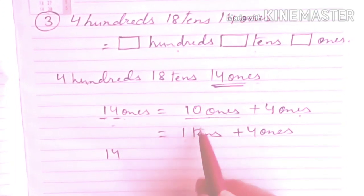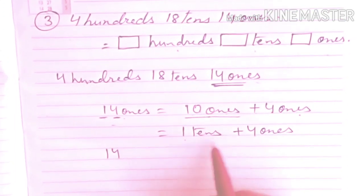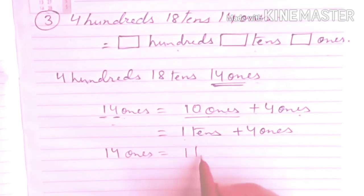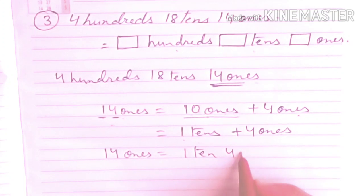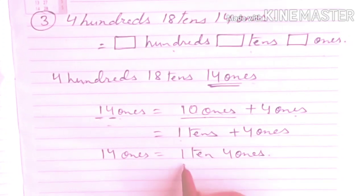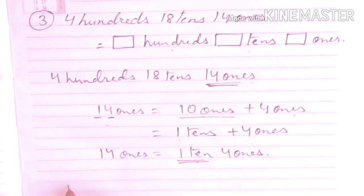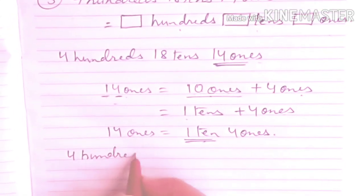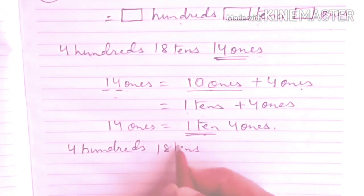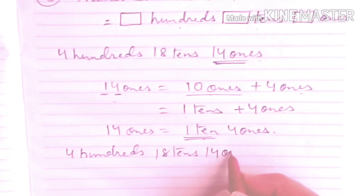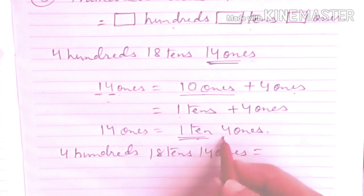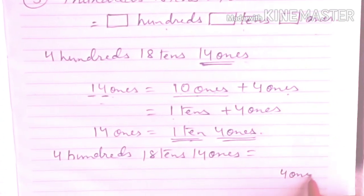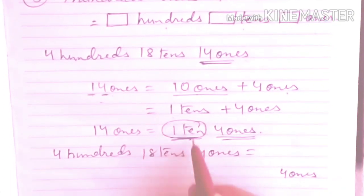We have to add the 1 ten to the tens place. So now we have here 4 hundreds, 19 tens, and 4 ones.